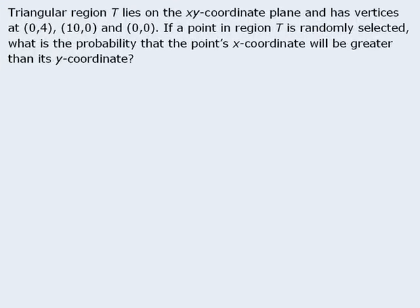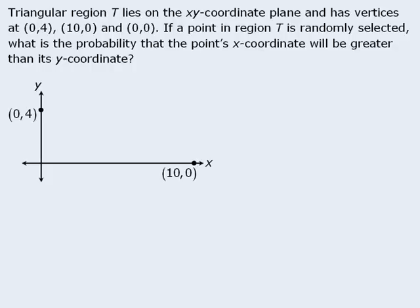In this question, we want to determine the probability that the x-coordinate of a randomly selected point will be greater than its y-coordinate. To begin, let's sketch region T. The triangle has vertices at the origin and these two points, so region T looks something like this. We are selecting a point in the yellow region and we want to find the probability that the point's x-coordinate is greater than the y-coordinate.